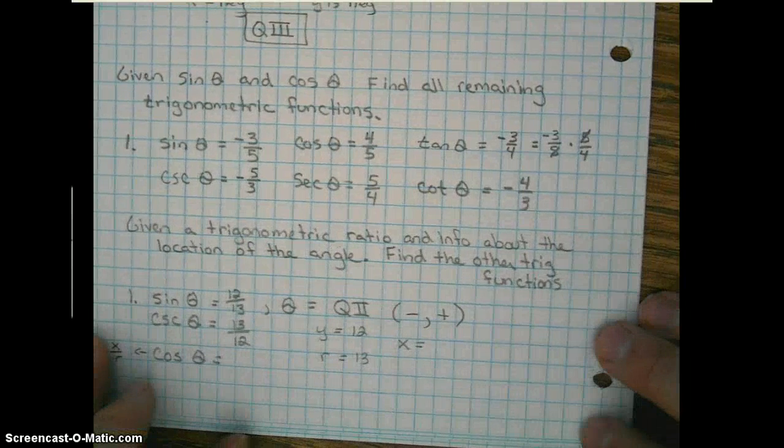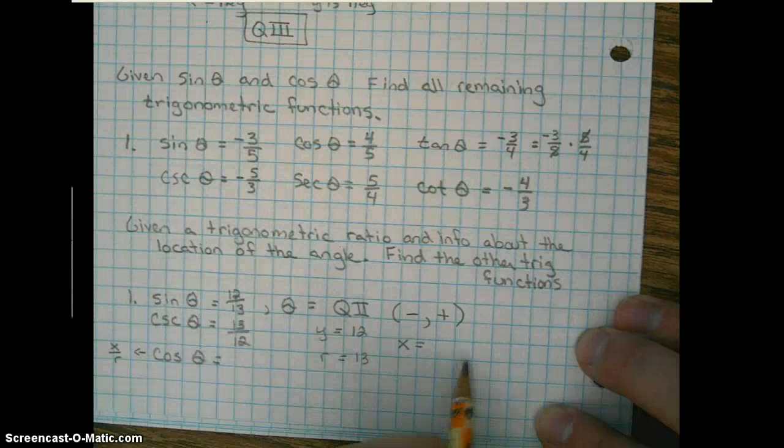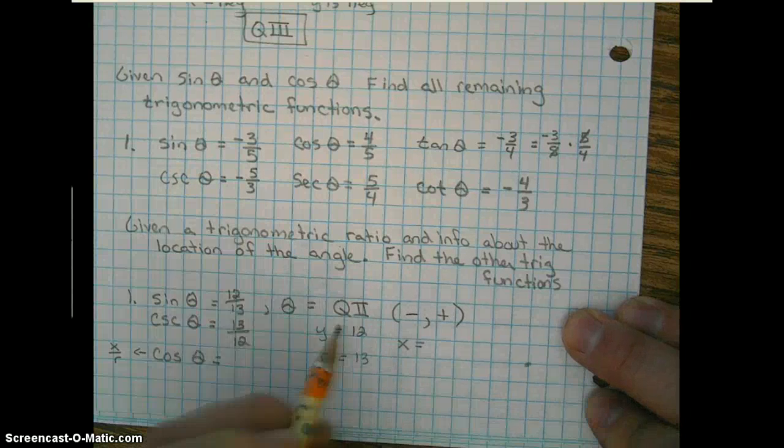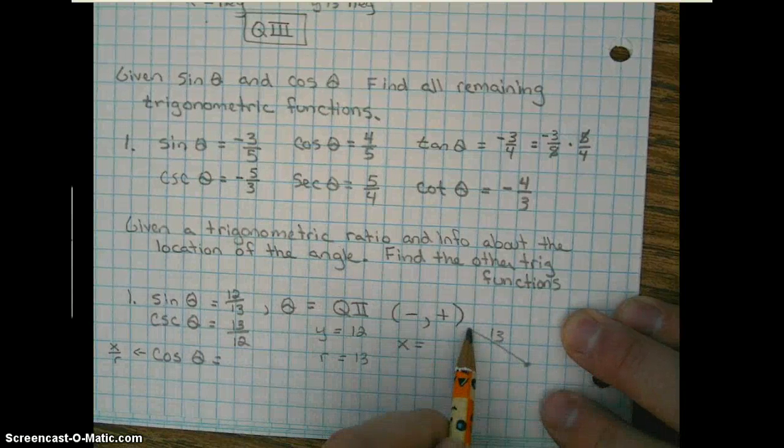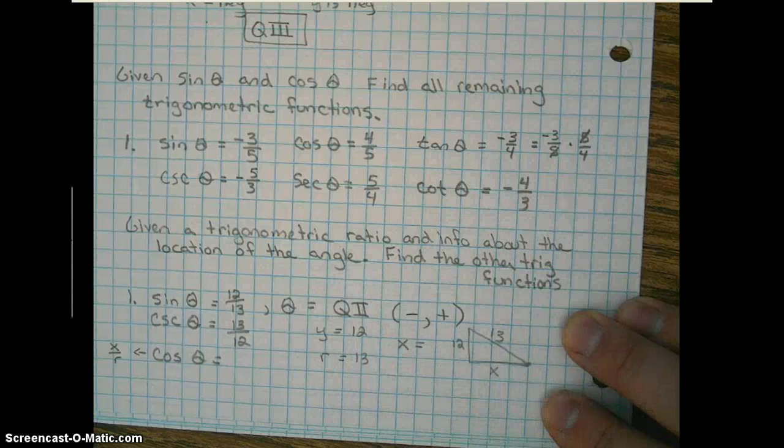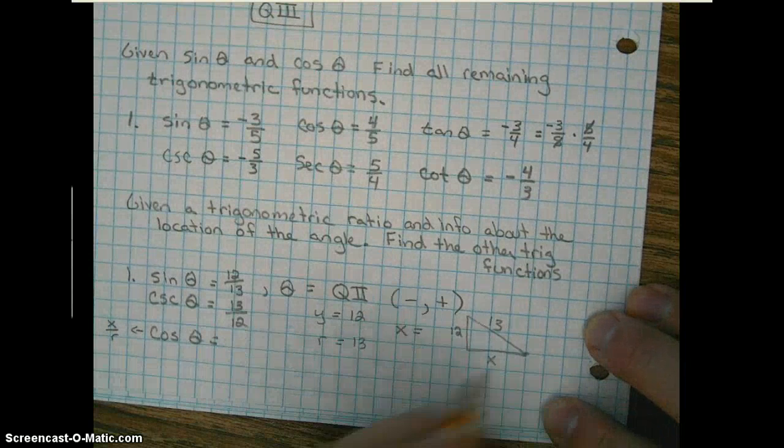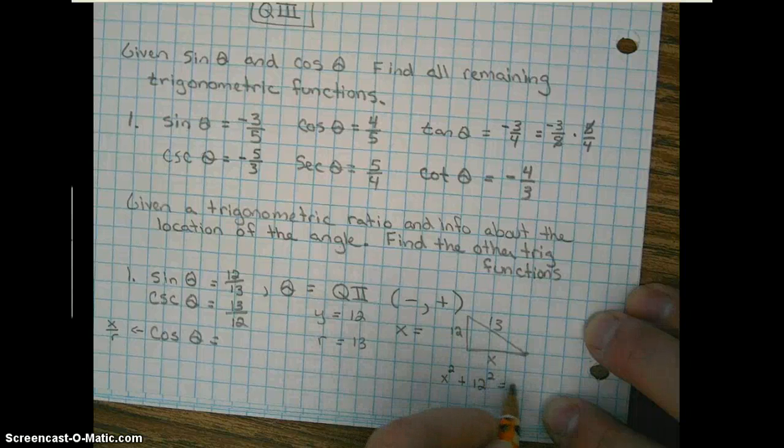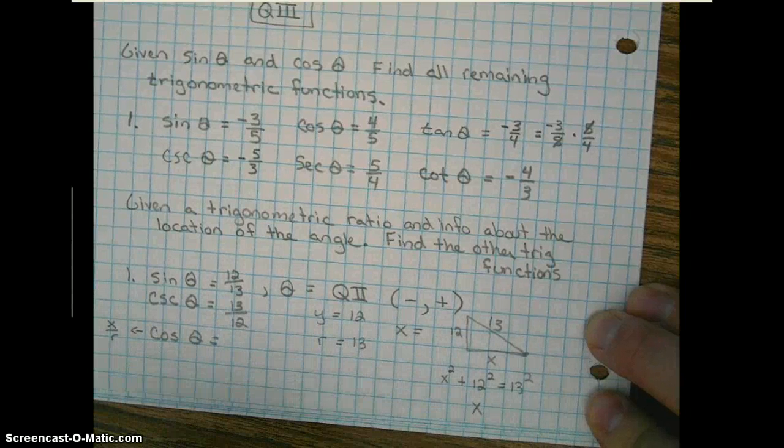So to do that, we use the Pythagorean theorem. So if I were to sketch this out, we're in quadrant 2. So if you could picture the center of our circle here, we have a radius of 13. We have a y coordinate of 12. And we're looking for this x value here. So what would we use to find x given this type of triangle? Correct. The Pythagorean theorem. So we would do x squared plus y squared equals 13 squared. Solving for x, we end up with, when you take the square root of 25, we end up with 5.